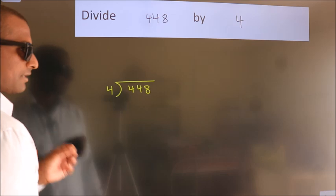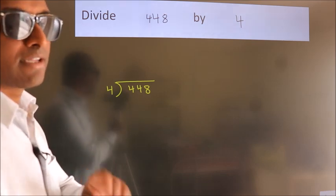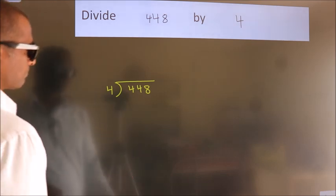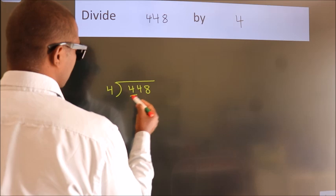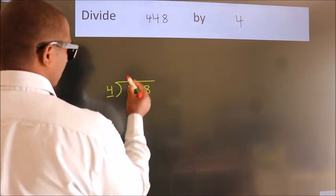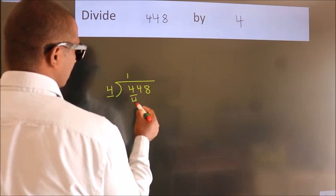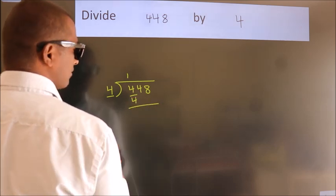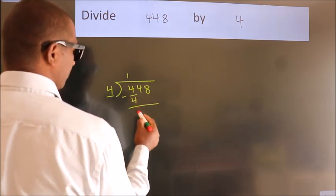This is your step 1. Next. Here we have 4, here 4. When do we get 4? In 4 table. 4 once, 4. Now we should subtract, we get 0.